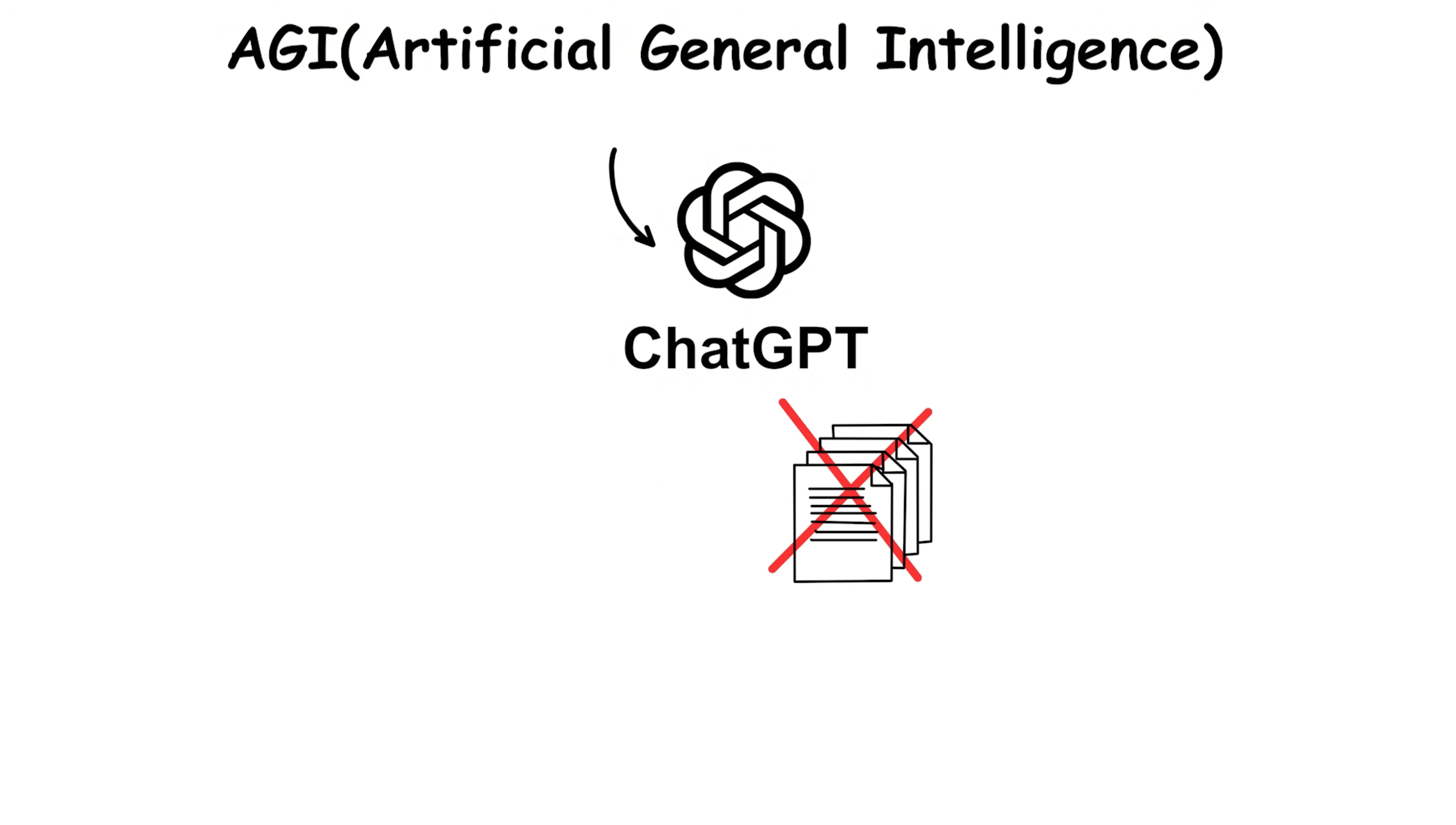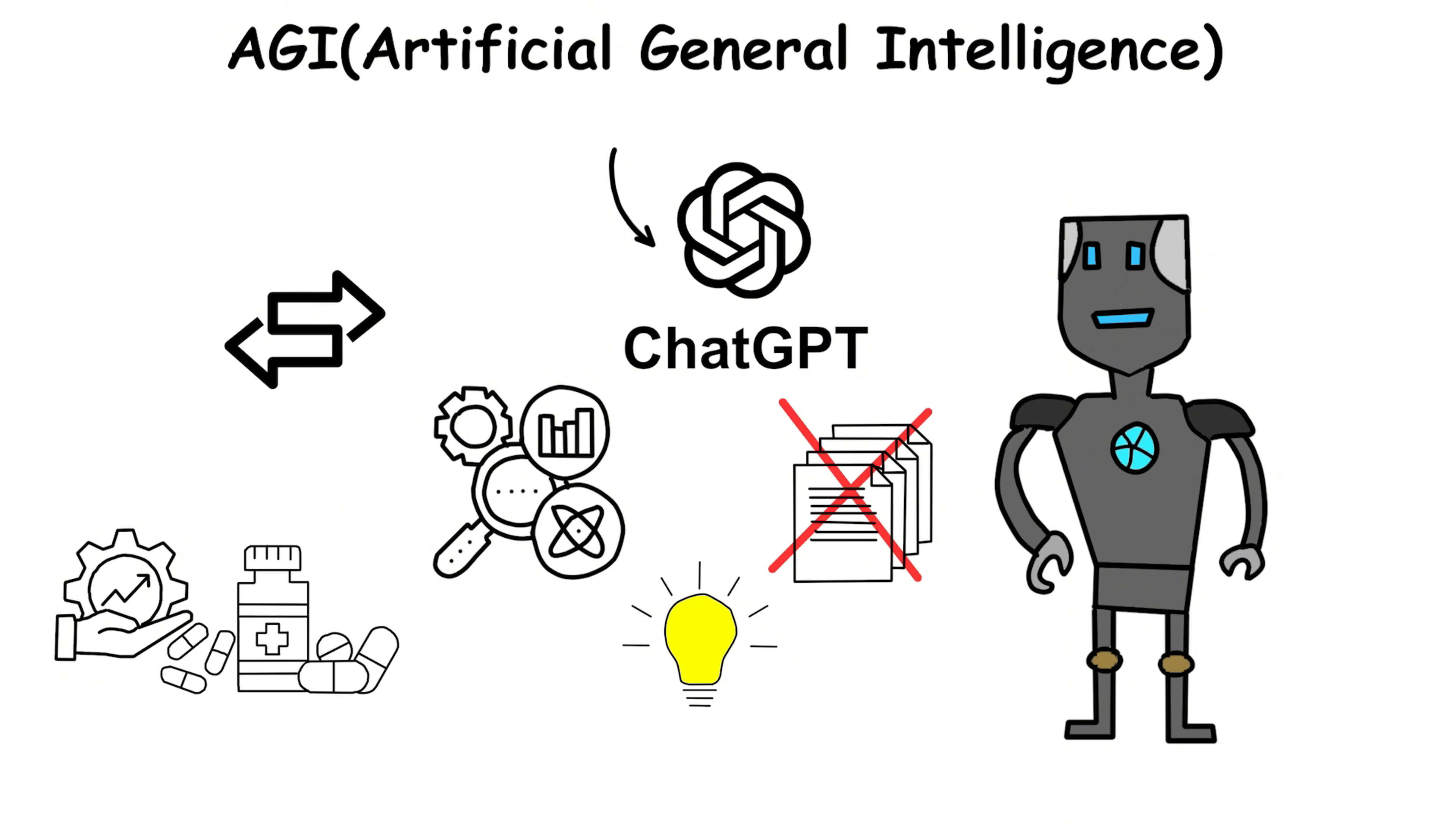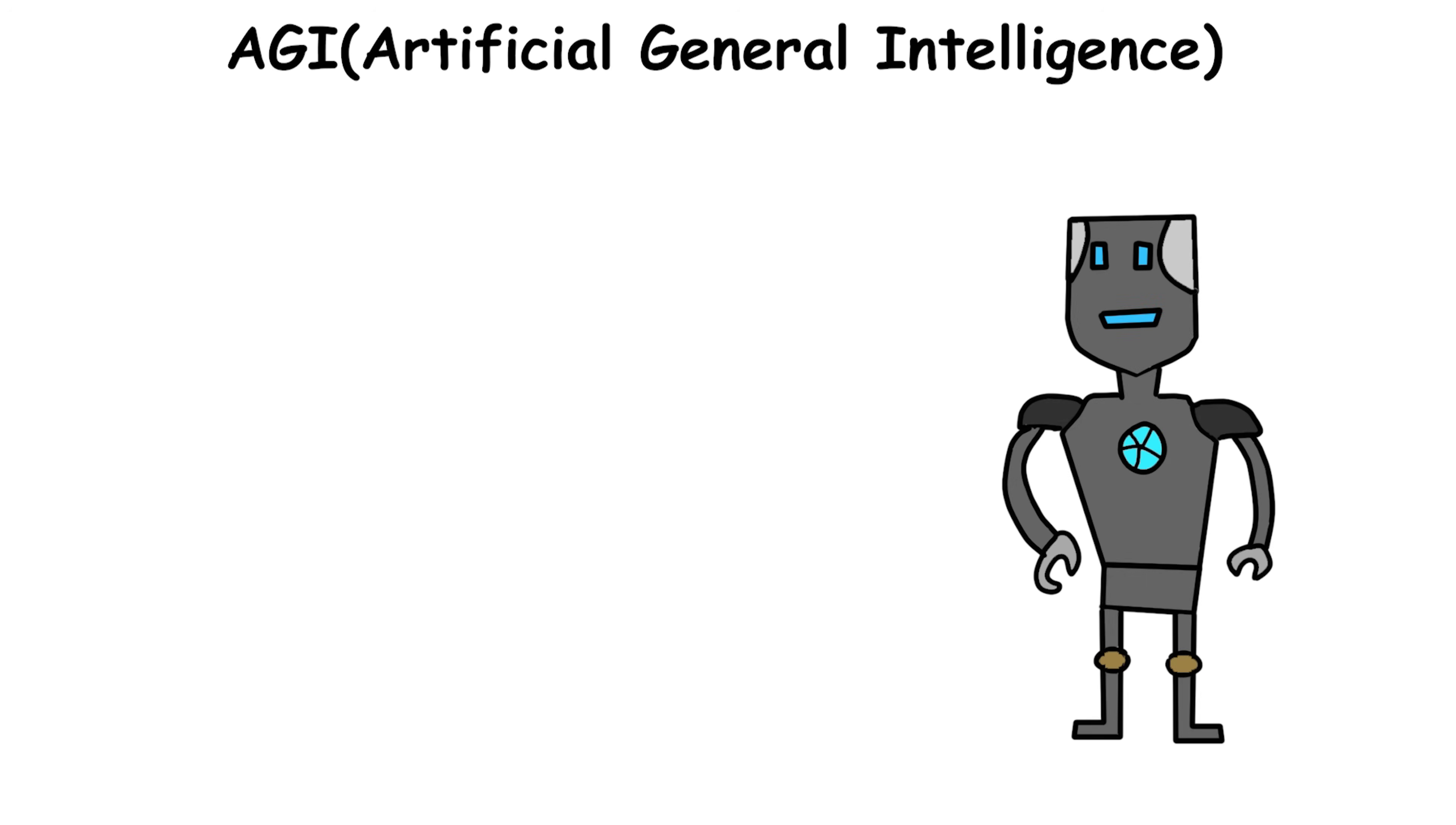Unlike today's models that fail outside their training data, AGI would grasp context, learn on the fly, and transfer knowledge across fields. If achieved, it could accelerate drug discovery, automate scientific research, or handle complex global simulations for climate policy. But it also raises hard questions about control and alignment, ensuring such intelligence aligns with human values before its power scales beyond our oversight.